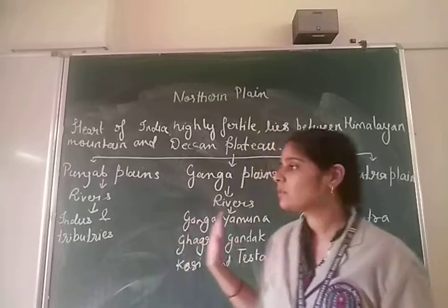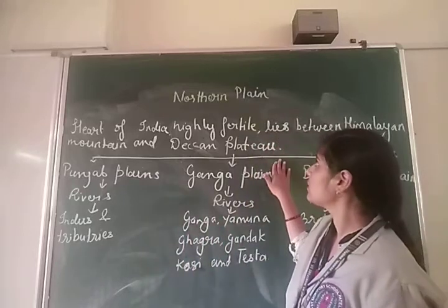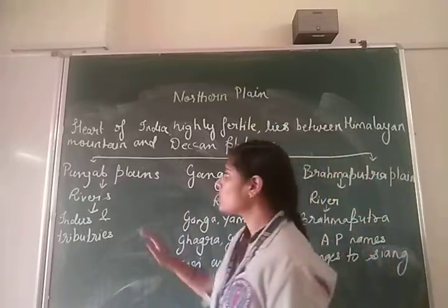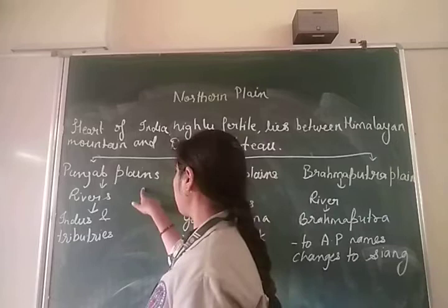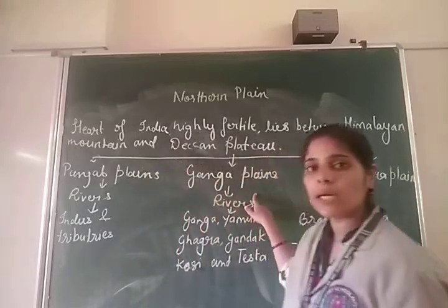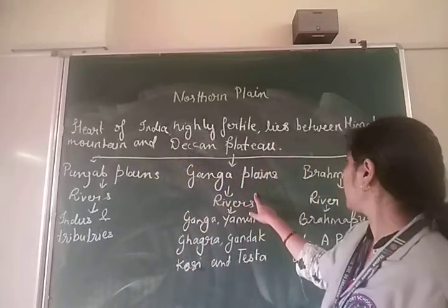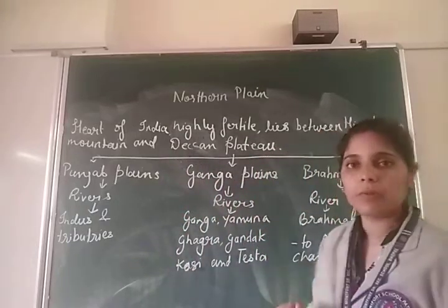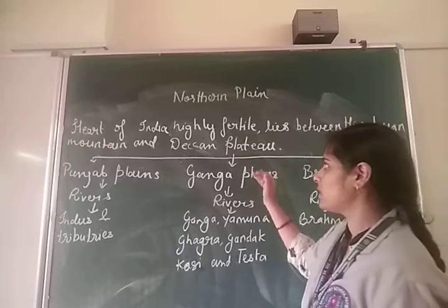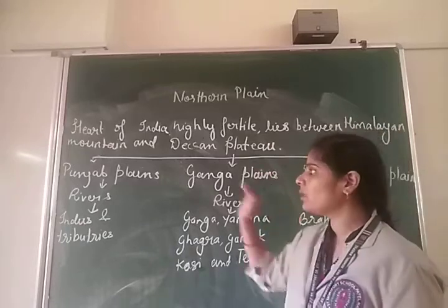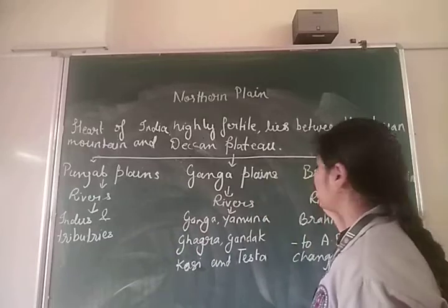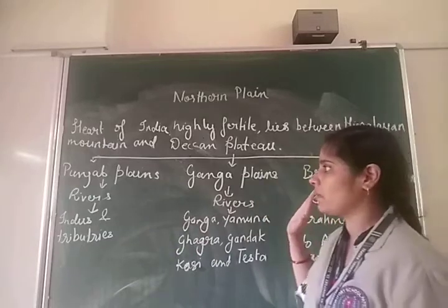Now, the Northern Plain is divided into three parts. The first one is the Punjab Plain. The second one is the Ganga Plain. And the third one is the Brahmaputra Plain. So the Northern Plain is divided into three: the Punjab Plain, the Ganga Plain, and the Brahmaputra Plain.